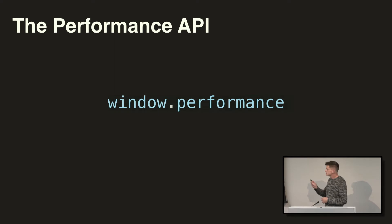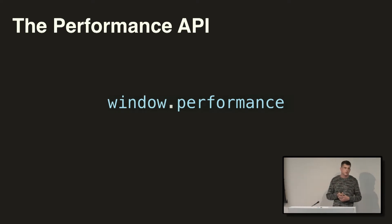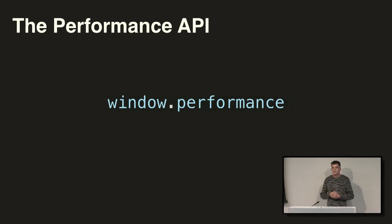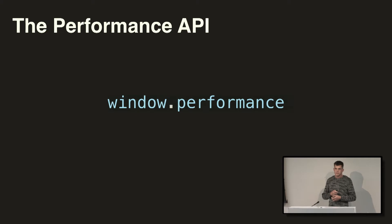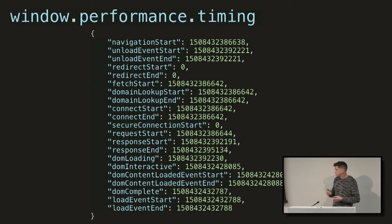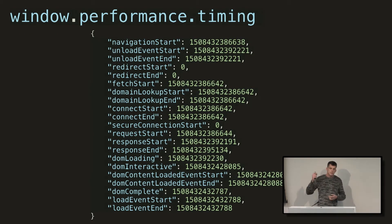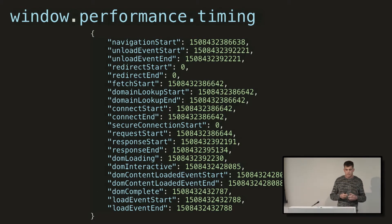Sitting out on the window object is this performance property — this is the Performance API. In general, you can use it to instrument the performance of your web pages. It contains lots of useful properties, and I'm going to talk about two of them today. Within the performance property, we have this timing property. The timing property contains information about the performance of the page itself.